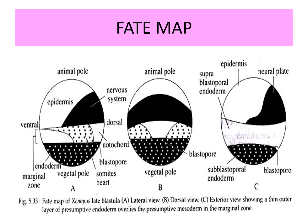Coming to the marginal zone or equator, it is formed by the mesoderm, and it forms the notochord and somites for the heart — shown as white with black dots. So these are the three layers: the upper one epidermis, the middle one mesoderm, and the lower one endoderm. The first view is the lateral view, and the second is the dorsal view of the same blastula. In the dorsal view, the epidermis is at the top, then the nervous tissue, then the somites on the sides and the heart, with the notochord in the center, and the endoderm at the last portion shown as black with white tips.